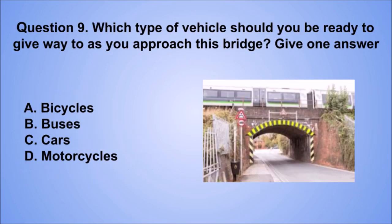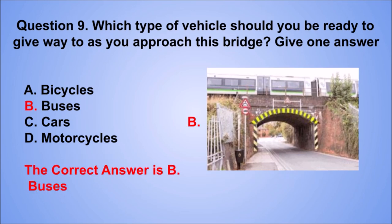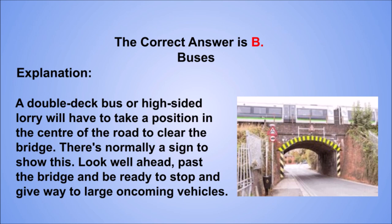Question 9. Which type of vehicle should you be ready to give way to as you approach this bridge? Give one answer. A. Bicycles. B. Buses. C. Cars. D. Motorcycles. The correct answer is B, buses. A double-deck bus or high-sided lorry will have to take a position in the center of the road to clear the bridge. There's normally a sign to show this. Look well ahead past the bridge and be ready to stop and give way to large oncoming vehicles.